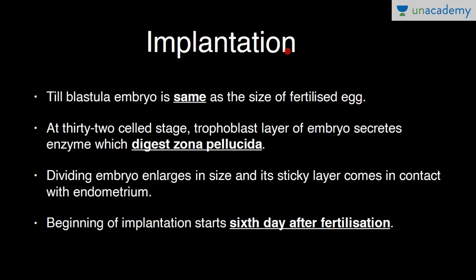Now regarding implantation: until the blastocyst stage, the embryo remains the same size as the fertilized egg due to persistence of zona pellucida. At the 32-cell stage, the trophoblast layer secretes an enzyme that digests zona pellucida, creating a small hole — zona pellucida ruptures. The dividing embryo enlarges and its sticky layer comes in contact with the endometrium. This is the beginning of implantation, starting at the 6th day after fertilization.